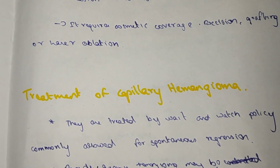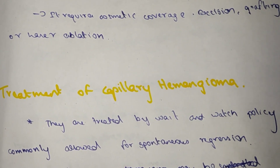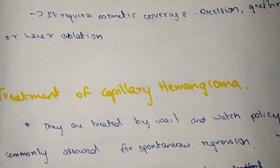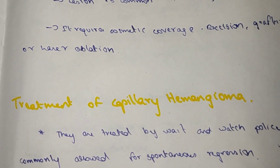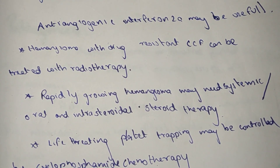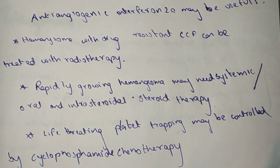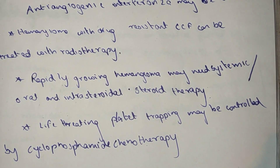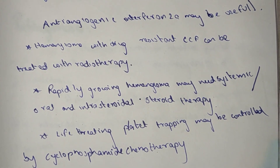The treatment for capillary hemangioma: the main policy is wait and watch, since strawberry hemangioma and salmon patch mostly regress on their own, except port wine stain. Antiangiogenic interferon 2a may be useful. Drug-resistant CCF hemangioma can be treated with radiotherapy. Rapidly growing hemangioma may need oral or intralesional steroidal therapy. Life-threatening platelet trapping may be controlled by cyclophosphamide chemotherapy.